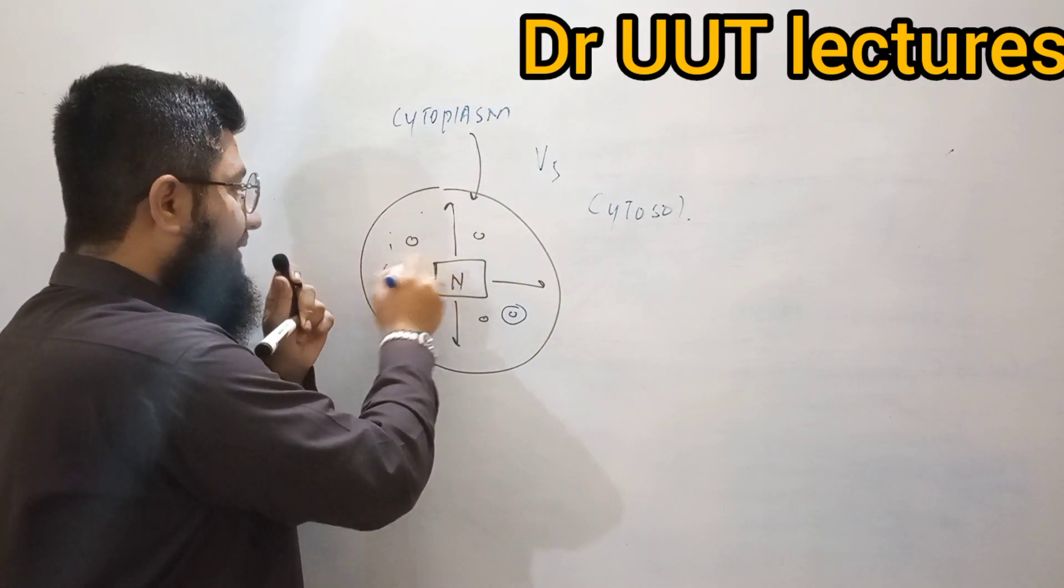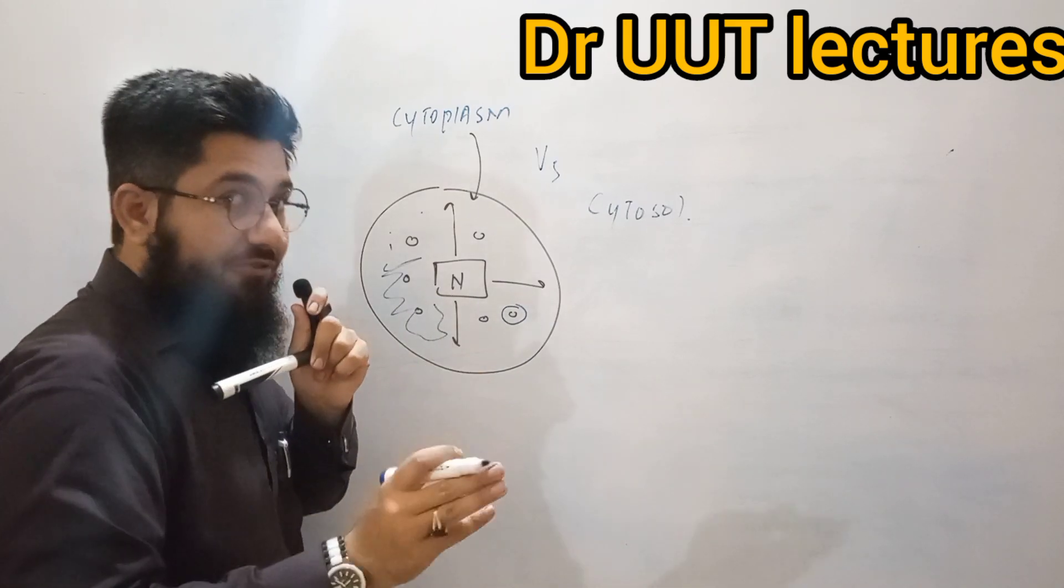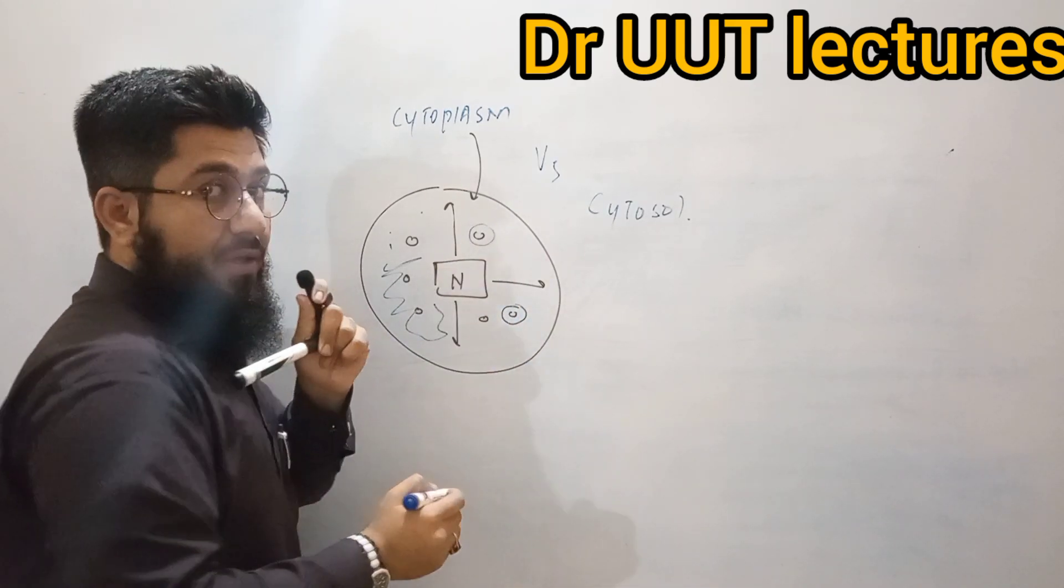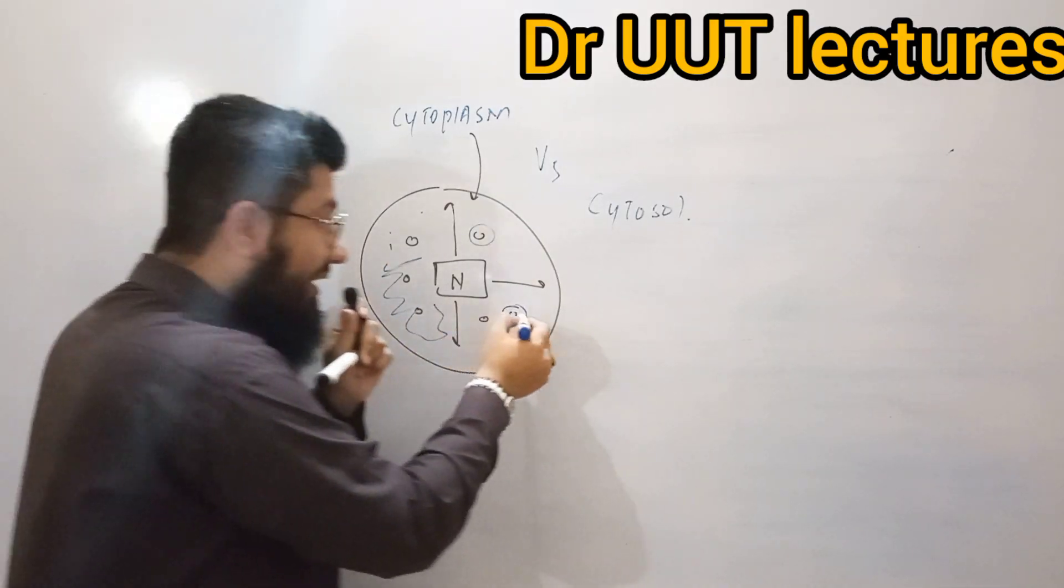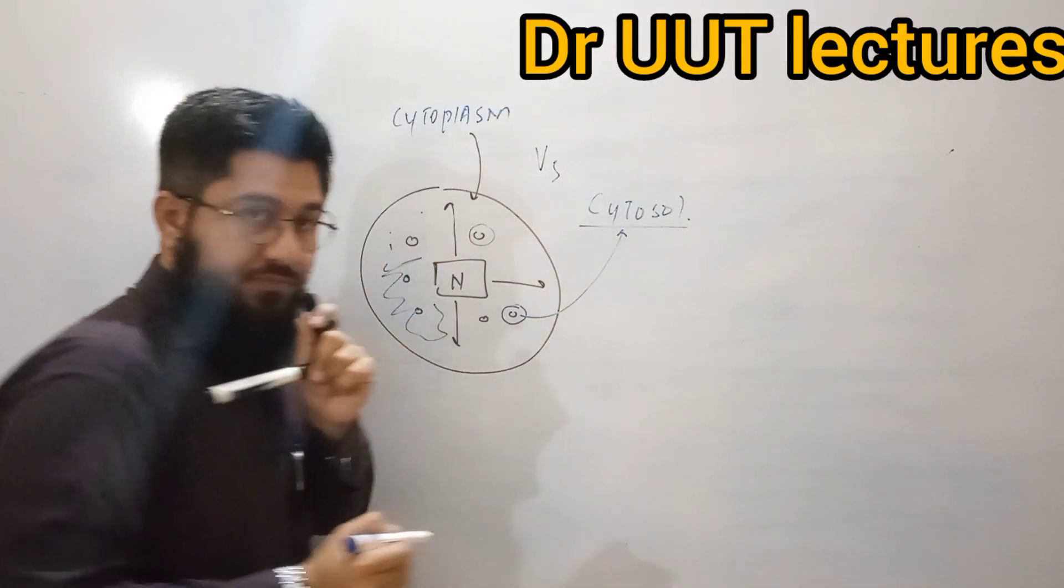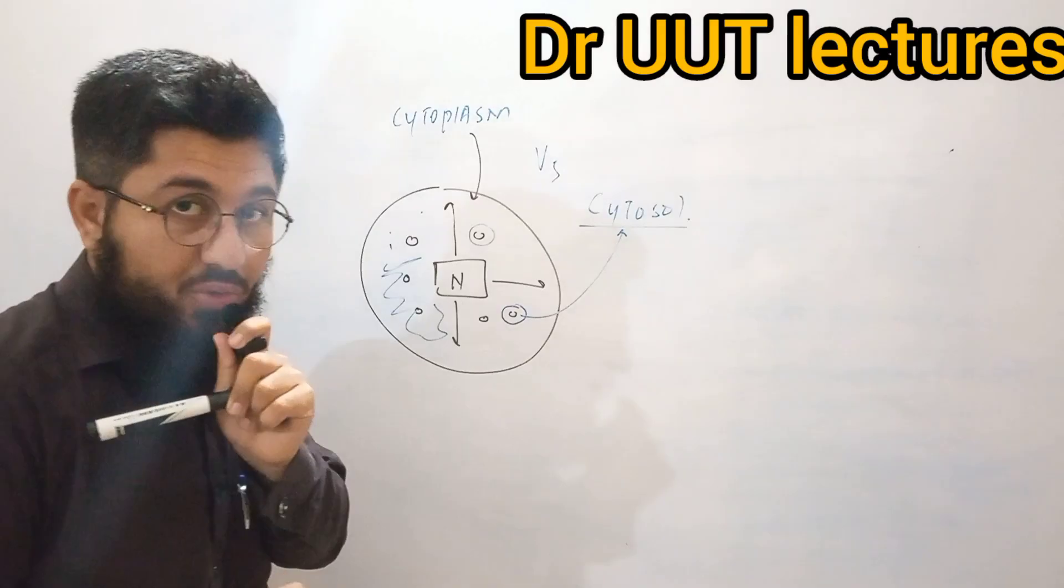So the entire cell is having a fluid. That fluid is different than the fluid that is surrounding the organelle. So the fluid that is surrounding the organelle, that is called cytosol.